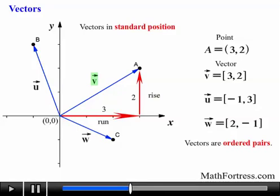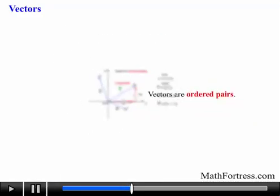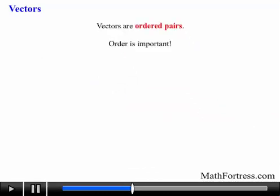These numbers are called the components of the vector. Because of the fact that vectors are a type of ordered pair of real numbers, the order is important since a vector with components [3, 2] is different when compared to a vector with components [2, 3]. Remember, the first component represents the direction of the x-axis, and the second corresponds to the direction in the y-axis.